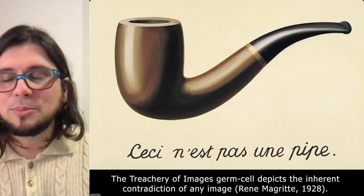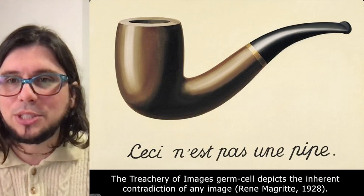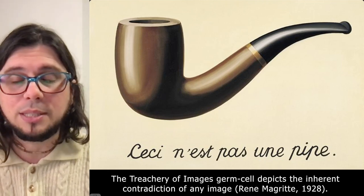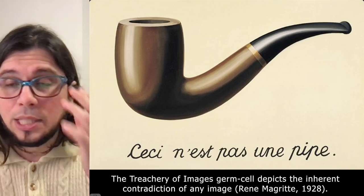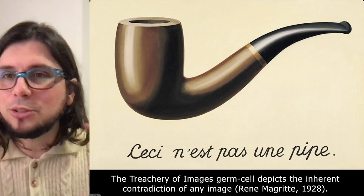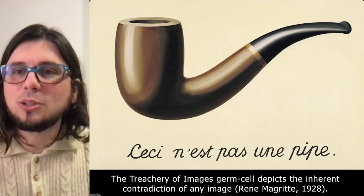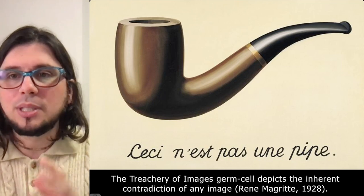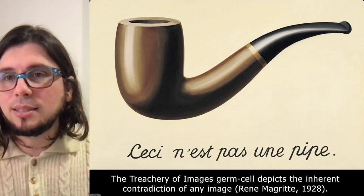You cannot definitively pinpoint contradictions too clearly, because if you resolve them completely they are no longer real contradictions. Therefore, the form of germ cells must be ambiguous, enigmatic, scary, open-ended, controversial, but also playful. The best germ cell I've found so far is 'The Treachery of Images' by René Magritte — a surrealist painter who, in the 1920s, encapsulated the whole history of art and human language in one single picture: a pipe with the caption 'This is not a pipe.'